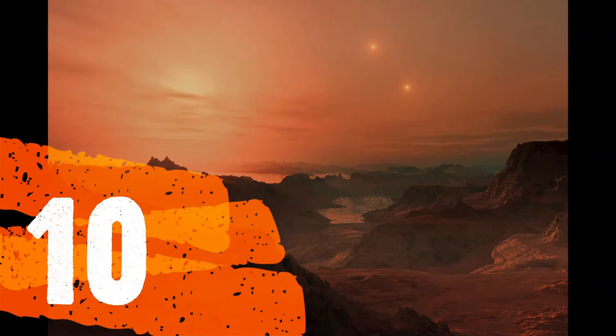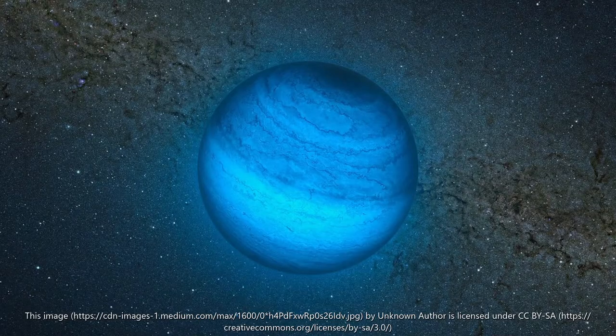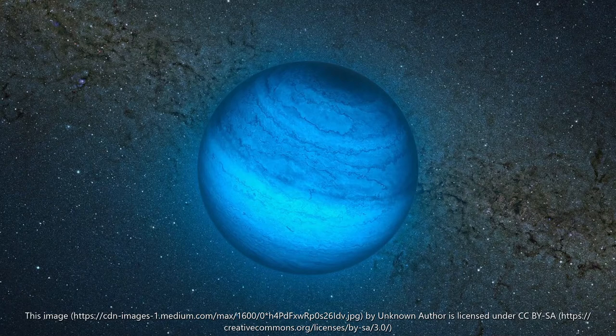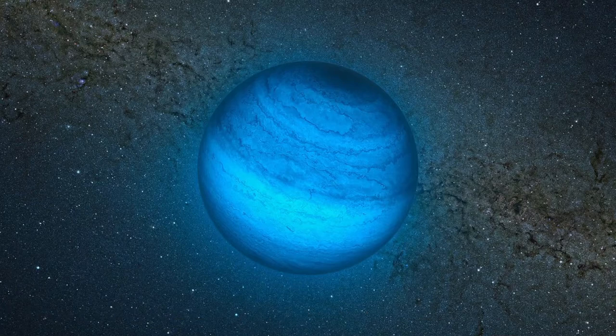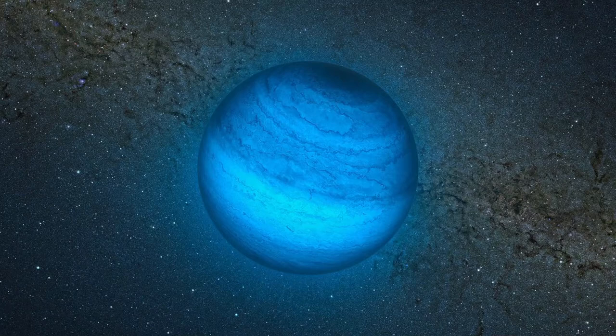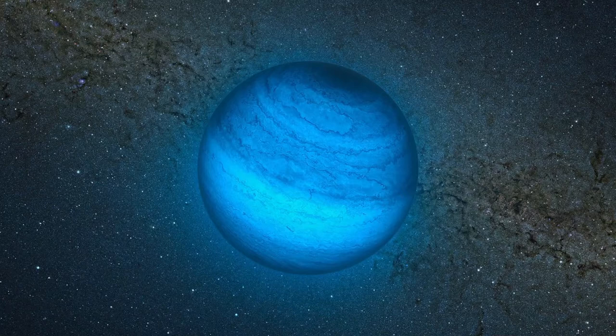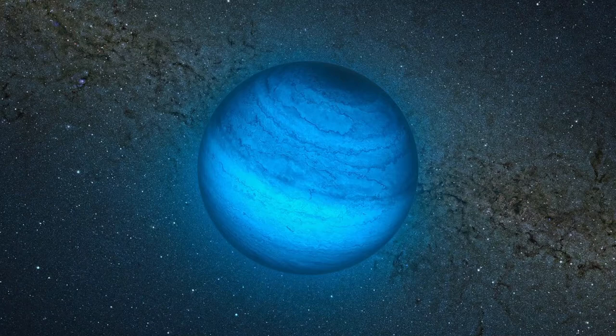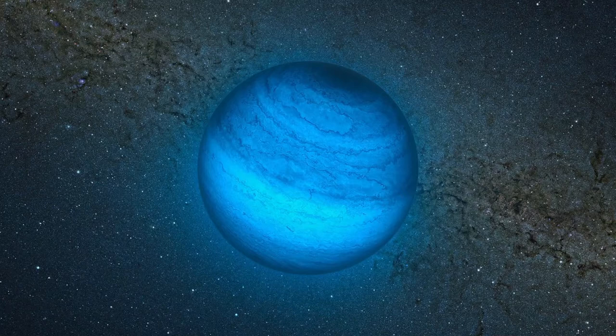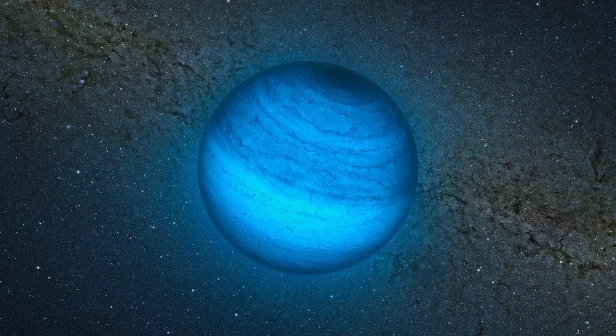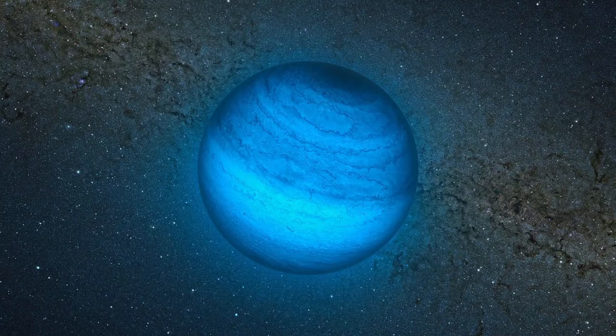Number 10: HD 189733b. In 2005, astronomers discovered a Jupiter-sized exoplanet HD 189733b with a distinctive Earth-like blue hue 63 light-years away. However, unlike Earth, HD 189733b was not blue because of its seas and oceans. Instead, the color came from its silicon-rich clouds. HD 189733b is also deadly. The first problem is the 8,700 km per hour or 5,400 miles per hour winds that blow across the exoplanet. That is seven times the speed of sound, which is insanely fast.